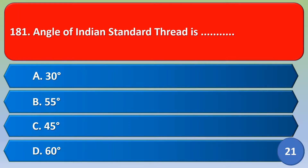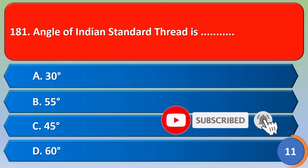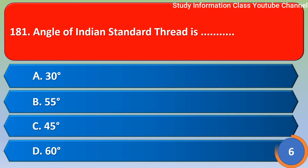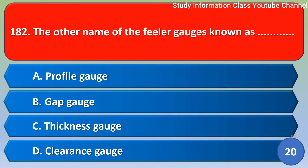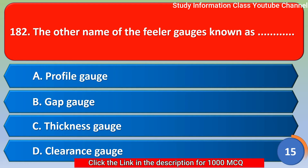Namaste. The angle of Indian Standard Thread is: option A 30 degree, option B 55 degree, option C 45 degree, option D 60 degree. The correct answer is option D — 60 degree. The angle of Indian Standard Thread is 60 degree.